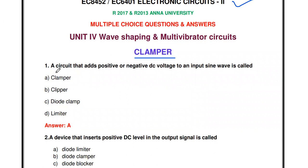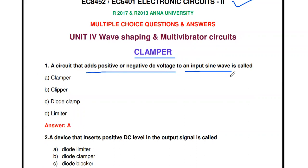First question: A circuit that adds positive or negative DC voltage to an input sine wave is called what? The answer is a clamper. The clipper, as you already know, is a circuit used to remove some portion of the given input signal.